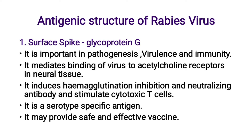Next, the antigenic structure of Rabies Virus. The first antigen is the surface spike glycoprotein G antigen. It is important in pathogenesis, virulence, and immunity. It mediates binding of the virus to acetylcholine receptors in neural tissues. It induces hemagglutination inhibition and neutralizing antibodies and stimulates cytotoxic T cells. It is a serotype-specific antigen and may provide a safe and effective vaccine.